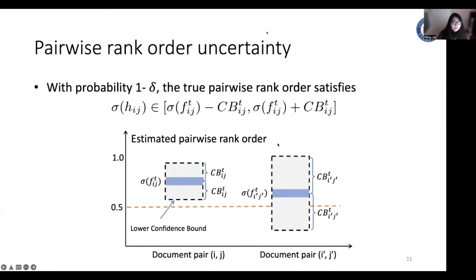Now let's see an example. Suppose we have two document pairs, document i,j and document i',j'. This y-axis is the probability that the first document is better than the second document. And here, this blue bar is our estimated pairwise preference, and the gray rectangular is the confidence interval of our estimation. So for document pair i and j, we consider it as a certain rank order, because its lower confidence bound is larger than 0.5. It means that the true rank order is consistent with our estimated order.